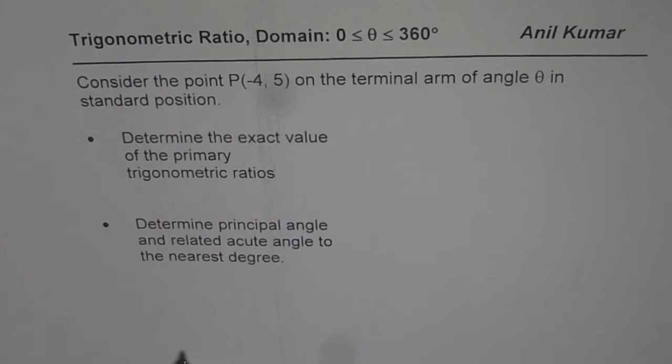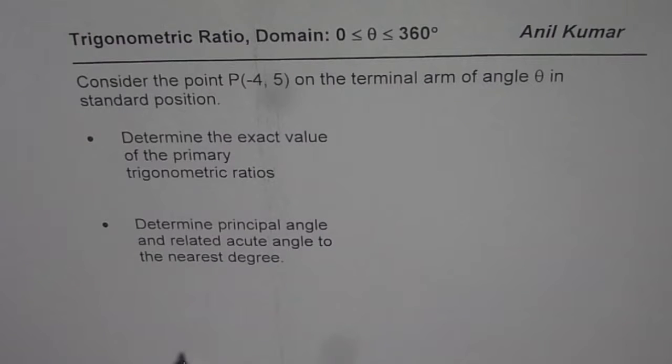I am Anil Kumar and in this video, we will explore trigonometric ratios in the domain of 0 to 360 degrees. Question is, consider the point P(-4, 5) on the terminal arm of angle theta in standard position. Determine the exact value of primary trigonometric ratios and determine principal angle and related acute angle to the nearest degree.